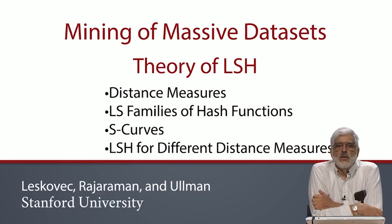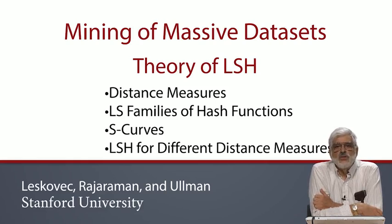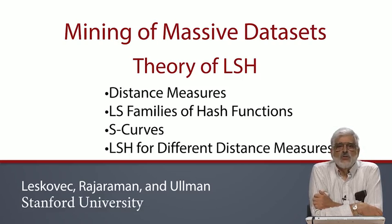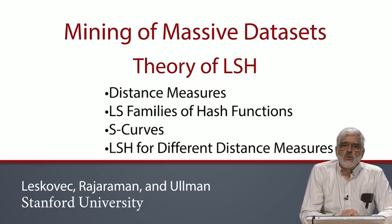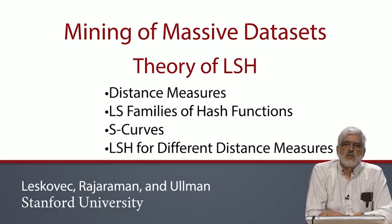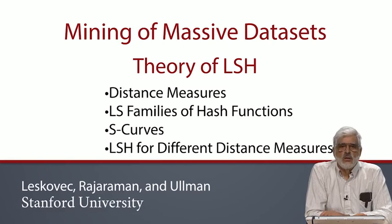Then we'll talk about locality sensitive families of hash functions as a general idea. We'll see that it is possible to combine hash functions from a family to get the S-curve effect that we saw for LSH applied to min hash matrices. The construction is essentially the same for any LSH family, and we'll conclude this unit by seeing some particular LSH families and how they work for the cosine distance and Euclidean distance.